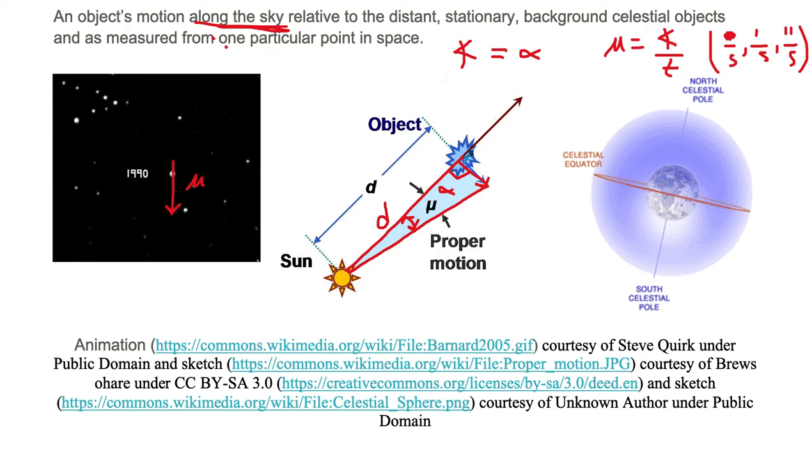Now keep in mind I said the object's motion along the sky. If you take a look at a celestial sphere, put yourself on the celestial sphere and you're looking at a star, you see that the celestial sphere is curved. The angle is also curved. Therefore, proper motion is also a curvature. Let's put that in a different color because it's so important.